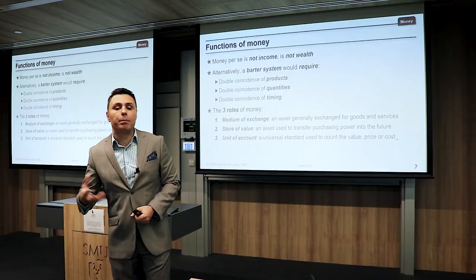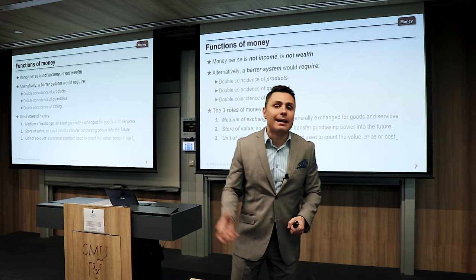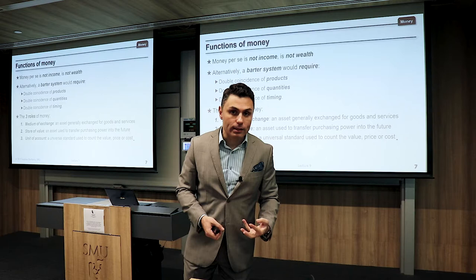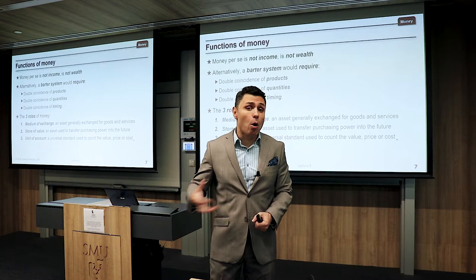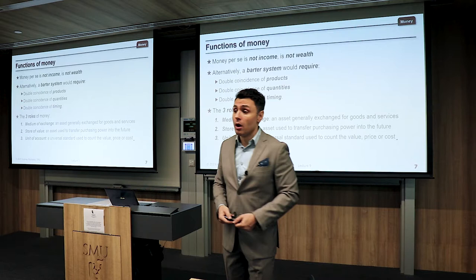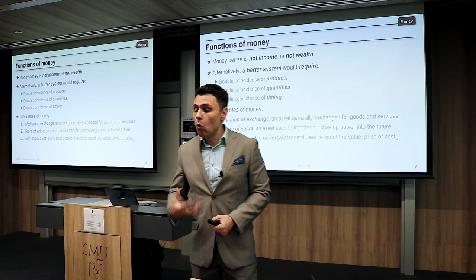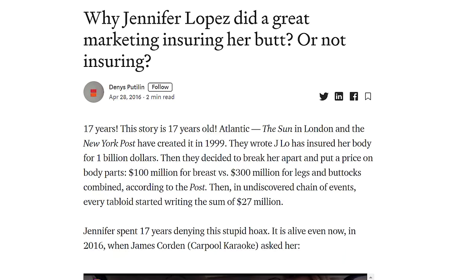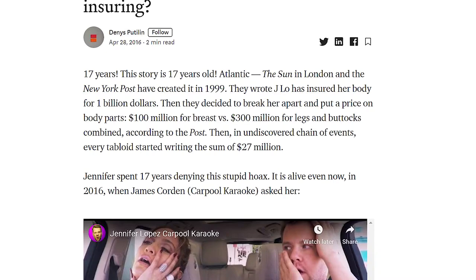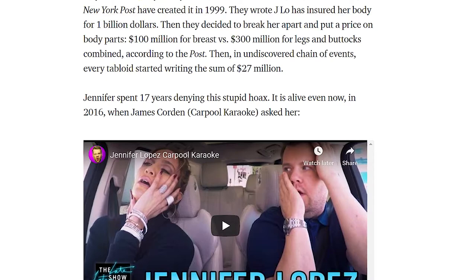The third role of money is that it is a unit of account — a universal standard used to count the value, price, or cost of anything. We can appreciate in money anything imaginable, from how much a tomato costs to how much a tanker ship costs to how much a human life costs. There are actuarial estimates for almost everything — one actuarial professional was even invited to estimate the value of Jennifer Lopez's rear end, which she wanted to insure for a very large sum.